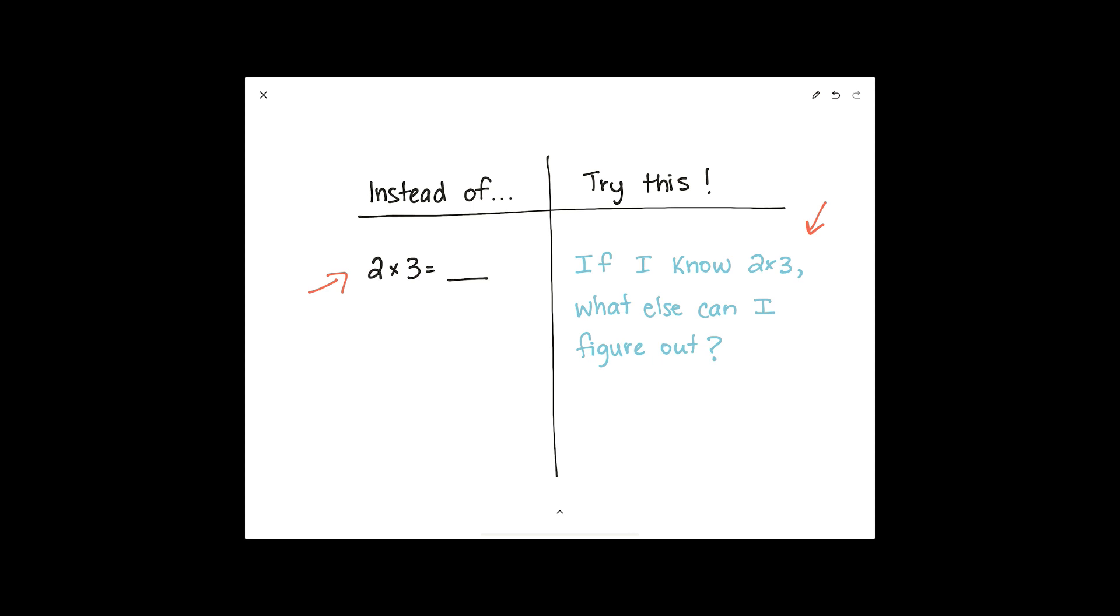So if we're looking at the left side and I'm simply filling in the blank, filling in the product, I am going to figure out 2x3, it's 6, I'll write down the answer and my work is done. What have I reinforced here? Well I've reinforced the fact that 2x3 equals 6 and that's really about it. I haven't made any other connections. I haven't really built much understanding. I'm really just focusing on the answer.